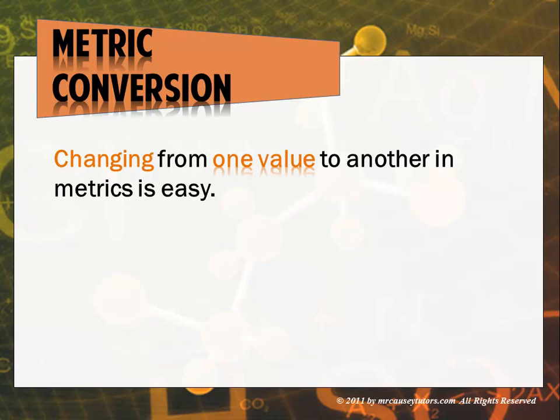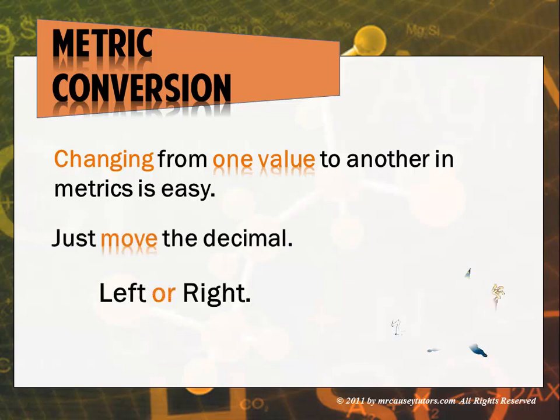Changing from one value to another in metrics is easy. Just move the decimal point left or right. Now, you might be thinking, oh, that's really simple, Mr. Causey. I think you've probably got a screw loose. But no, it's just that easy. Focus on the decimal point and then you have to just make a decision on whether it goes left or right.